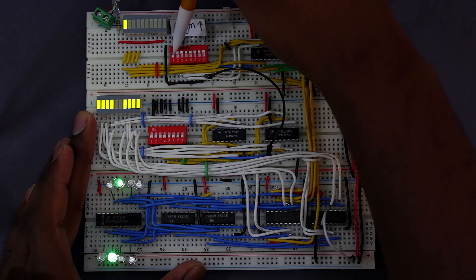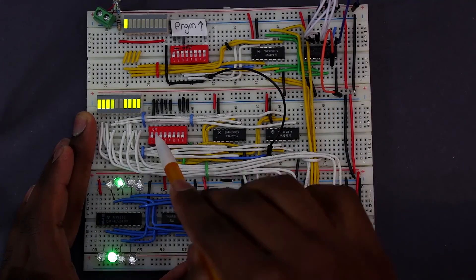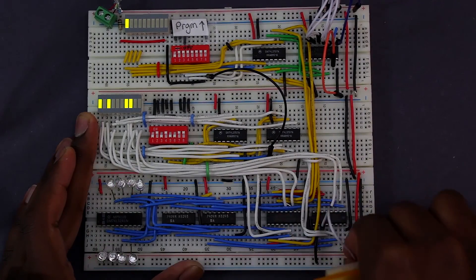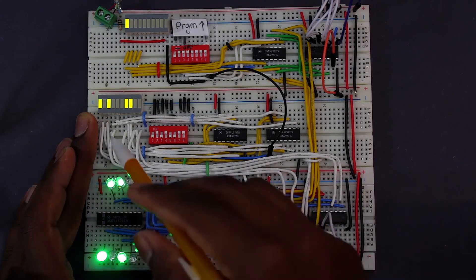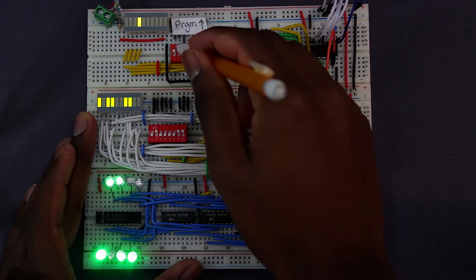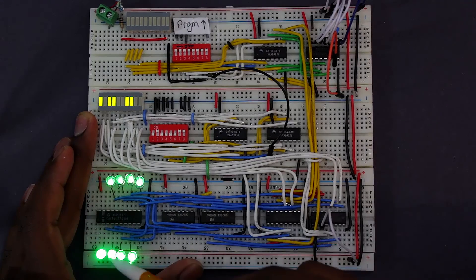If we change the address to eight, we get something random in the RAM. We can set new data for this address and then take the write enable line low to set it. Going back to address zero, though, we can see all the ones we set previously.